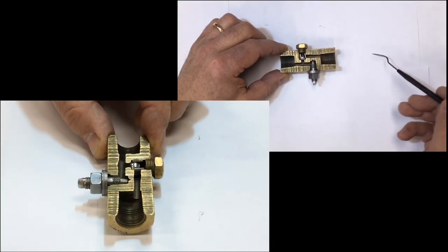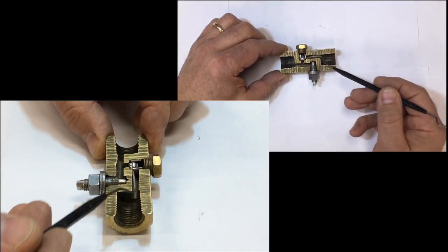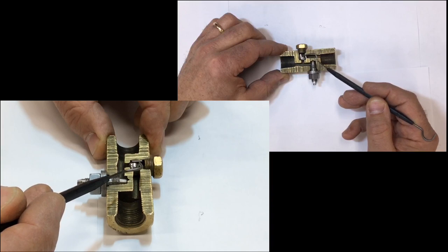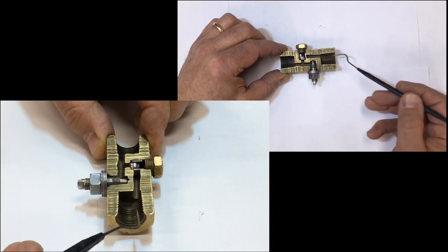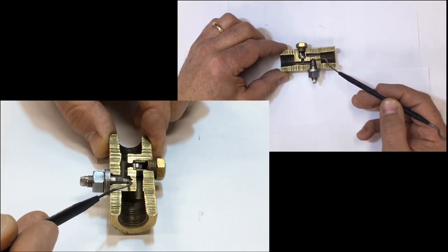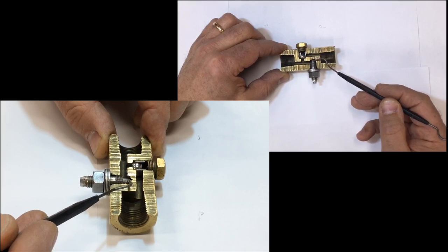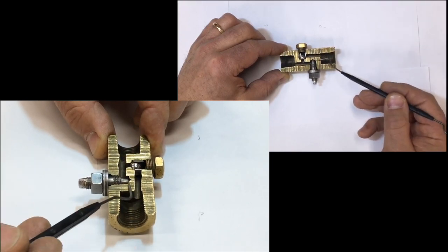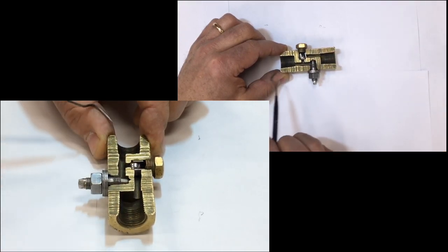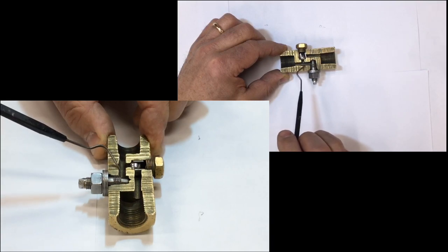But when I come in the opposite direction, the oil gets underneath the check ball, seats it against the seat, so it's forced to have to go through the variable orifice only. So in this direction, it's restricted flow, in this direction, it's full flow.